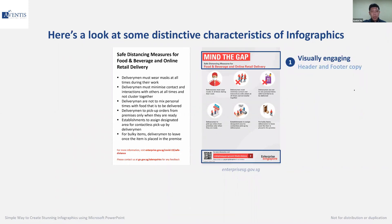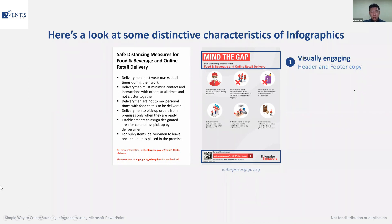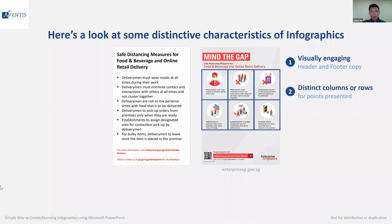If you look at the header and footer, the two boxes highlighted with the blue outline, you notice that compared to the sample on the left, it's more visually engaging and eye-catching because of the use of different types of colors. For infographics, they tend to have distinctive columns or rules for the points presented, making it easier for your audience to understand and process each of the different points.